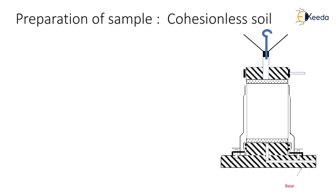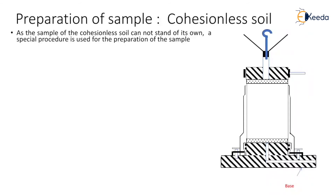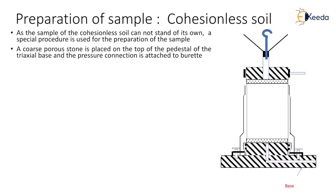Now let us discuss the method for the preparation of a sample of cohesionless soil. As the sample of cohesionless soil cannot stand on its own, a special procedure is used. A coarse porous stone is placed on the top of the pedestal of the triaxial base and the pressure connection is attached to the burette. There is a hole at the pedestal which is connected to the burette so that pore water pressure can be measured.